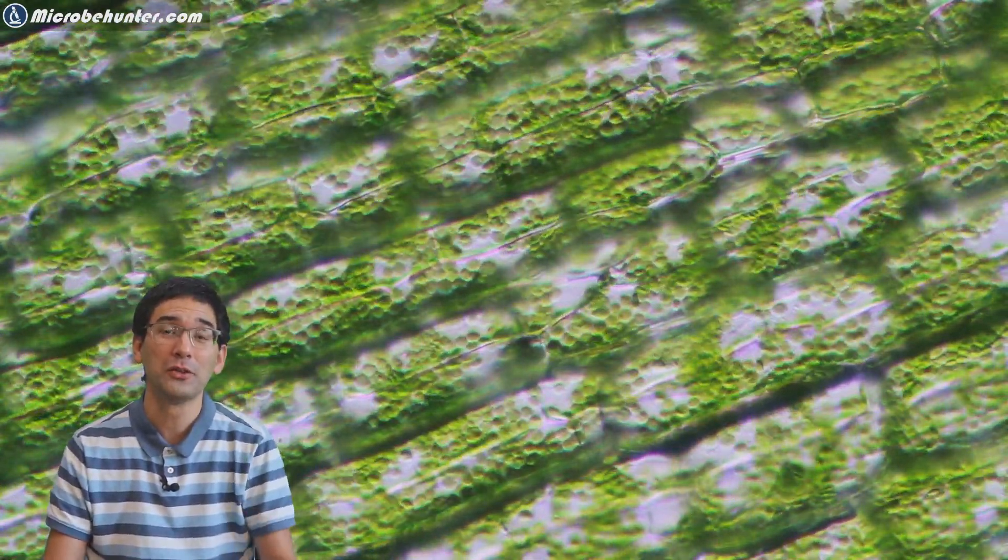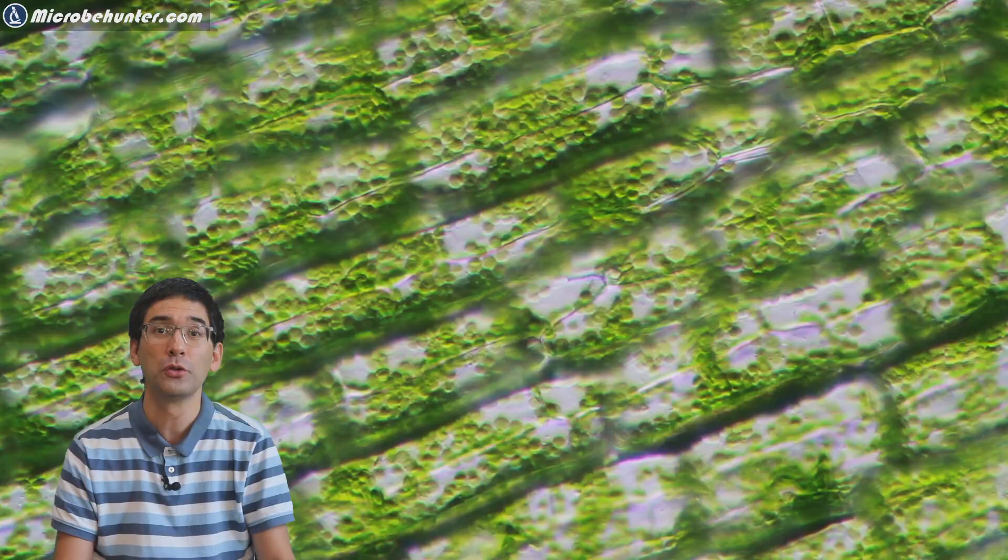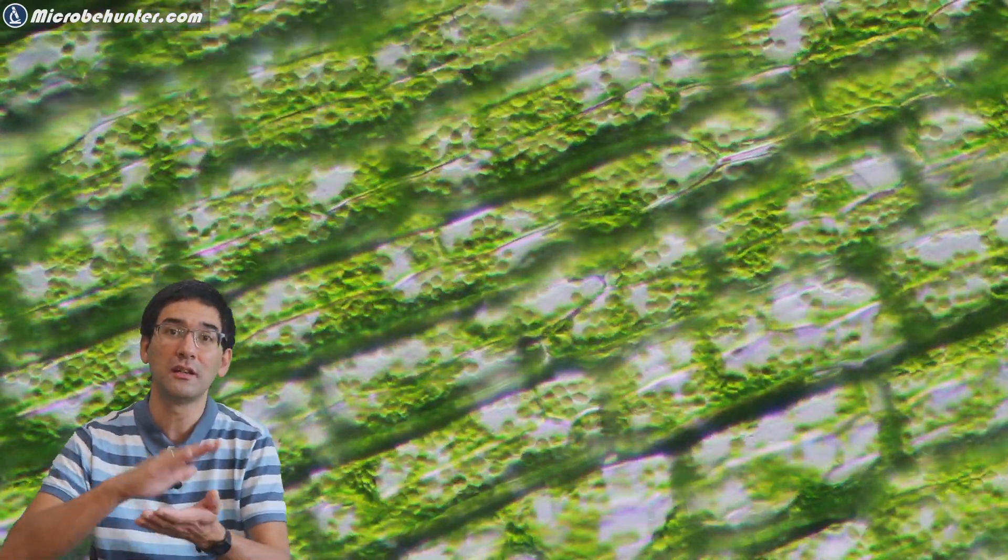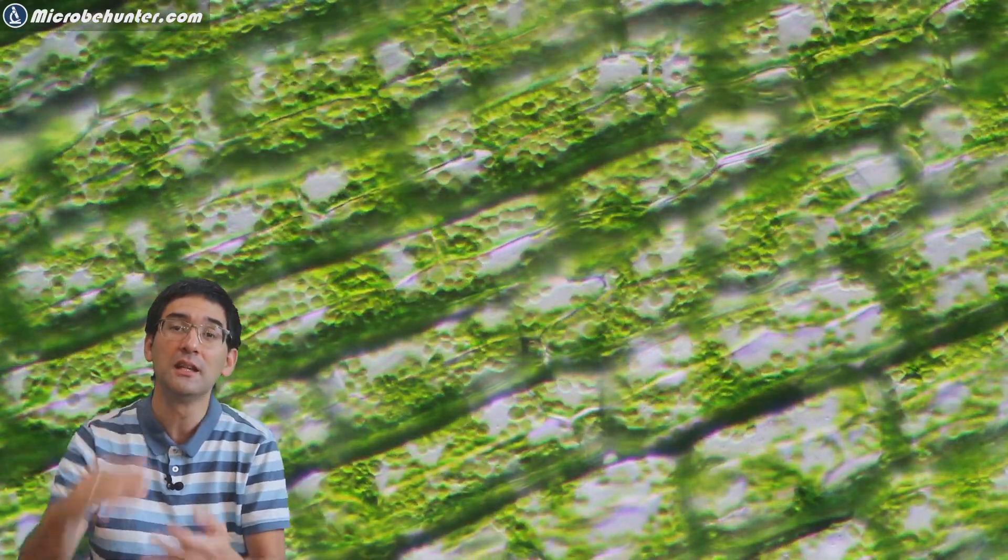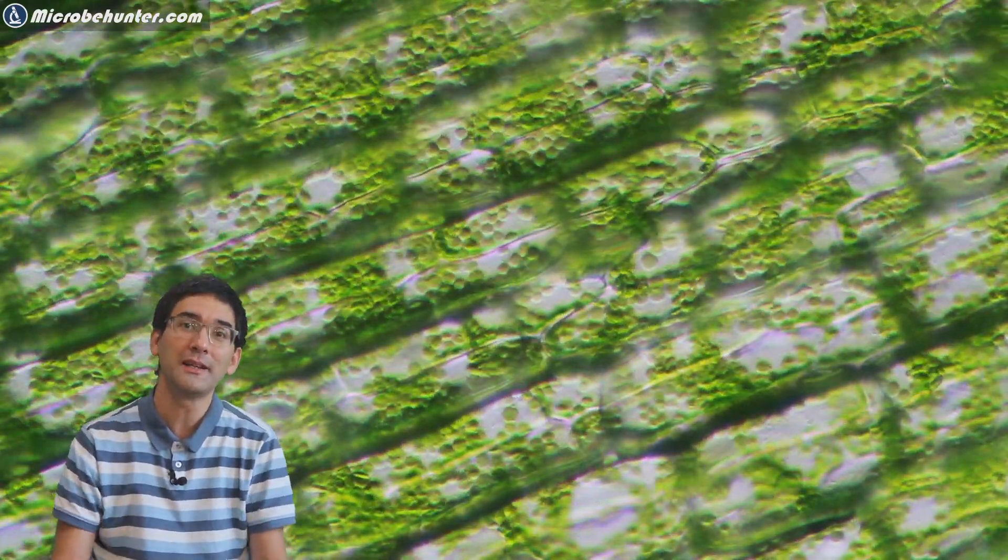You can also try to do that with moss. Moss also has very thin leaves and it's also suitable. But many other plants, you won't see a lot. The reason is that the leaf is several cell layers thick. It takes away all of the light and you're just going to see darkness and no cellular structure, no chloroplasts because everything's covered up in a dark shadow. And that's the reason why this water plant is so extremely suitable.